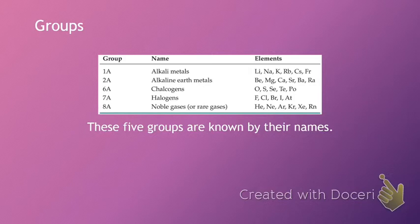6A, which is Oxygen, Sulfur, Selenium, and so on and so forth, they're the Chalcogens. 7A, the Halogens, and then the Noble Gases are in 8A.